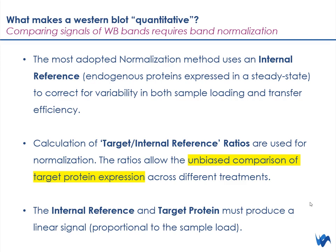This normalization factor or ratio will allow you to make comparisons between your target protein of interest across different lanes, different treatments, and will correct for any biases caused through loading variations or other variations. In order for these comparisons to be accurate, the internal reference and the target protein must have a linear relationship — there must be a proportional linear signal relationship between the signal of your internal reference and the signal of your target protein. This is key to accurate normalization and accurate quantitative western blotting.